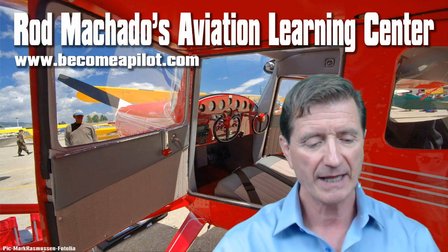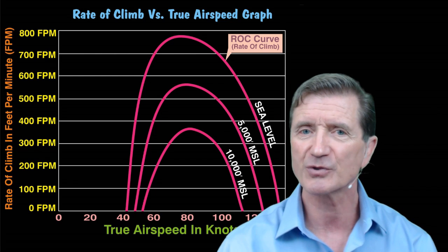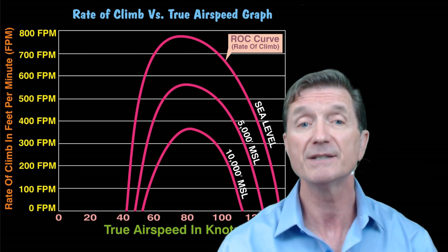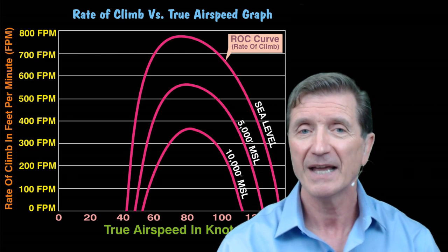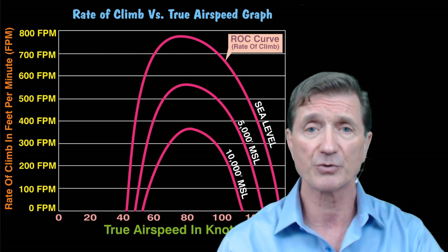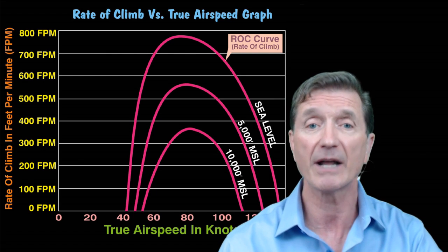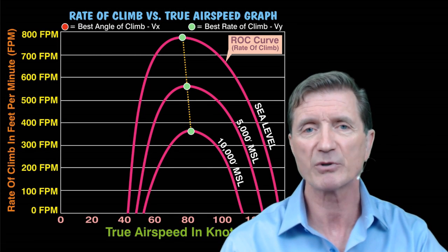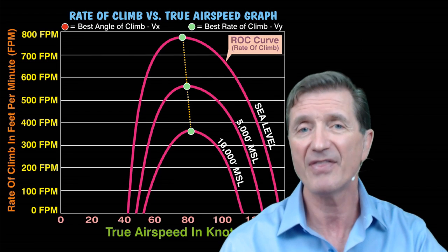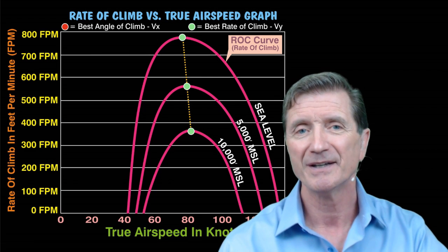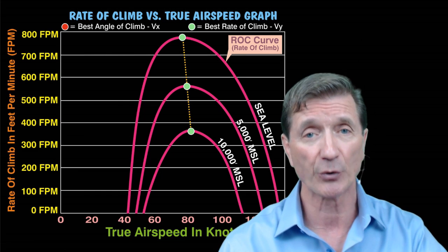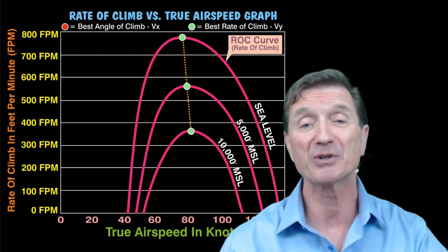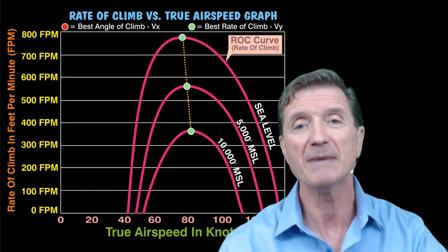I want you to take a look at these three rate of climb curves. There's one for sea level, one for 5,000 feet MSL, and one for 10,000 feet MSL. Each curve represents the rate of climb for a typical small general aviation airplane at three different altitudes, and the very tip top of each curve represents the maximum rate of climb for that particular altitude. It should be pretty apparent that as altitude increases, the maximum rate of climb decreases.